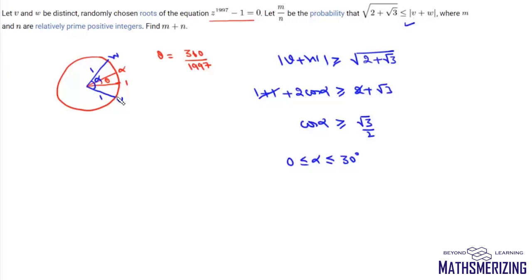Suppose we choose any one root. For this condition to be true, we have to choose the other root so that this angle is less than or equal to 30. Now we need to find how many choices we have for such cases.